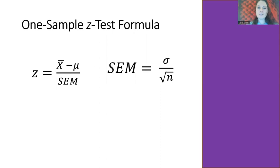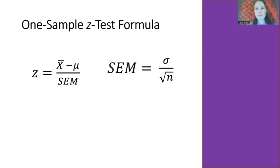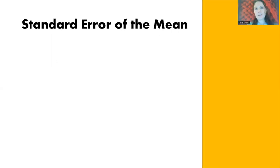We know that we previously used the symbol lowercase italic Z to represent a z-score. This will also be the symbol for our test statistic for the one-sample z-test. SEM stands for the standard error of the mean. Go ahead and put that on your symbol sheet: capital S, capital E, capital M — standard error of the mean.